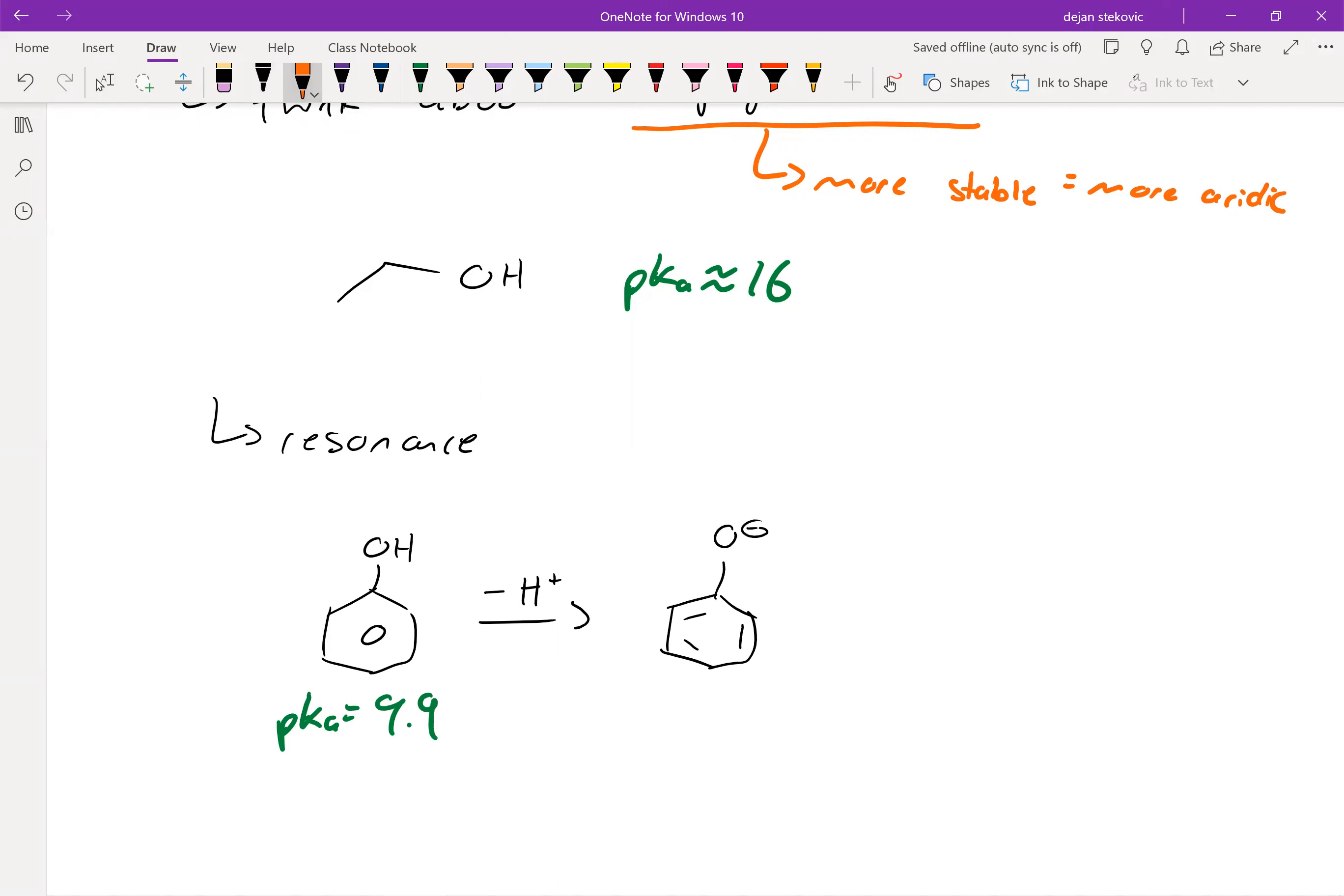And it's because, as we've seen in the previous chapter, this lone pair, this negative charge can be delocalized all throughout this ring, over across these three main highlighted carbons.